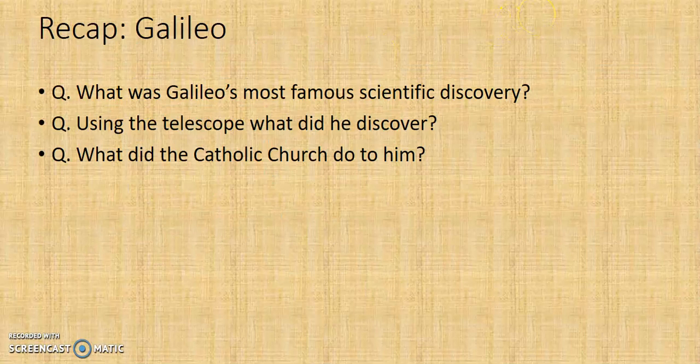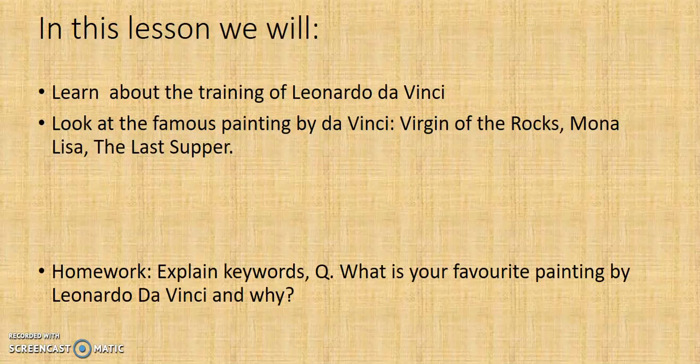You may remember from our other videos that we covered Galileo, whose discoveries brought him into conflict with the Catholic Church. He's the most famous scientific scholar associated with the telescope — through it he discovered that the earth revolves around the sun, not the other way around. The Catholic Church treated him horribly and didn't apologize until the 1990s, long after he was dead. In today's video lecture we're going to learn about the training of da Vinci.